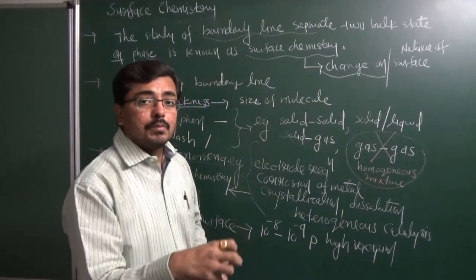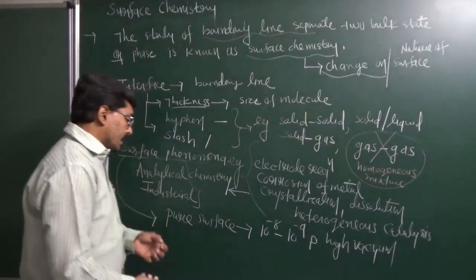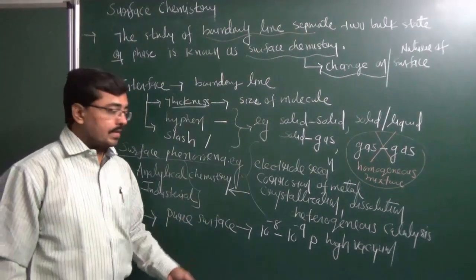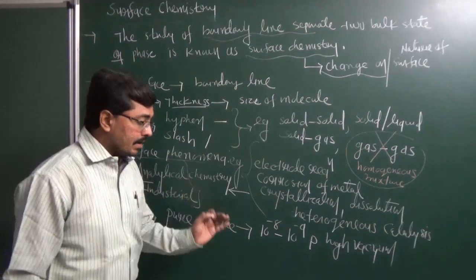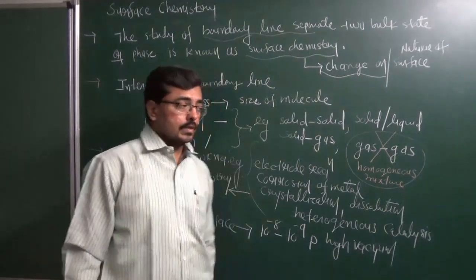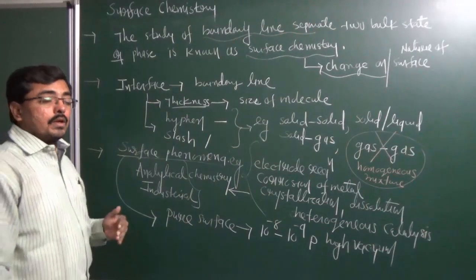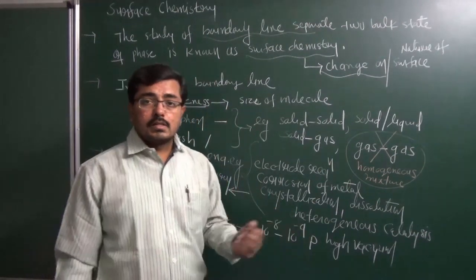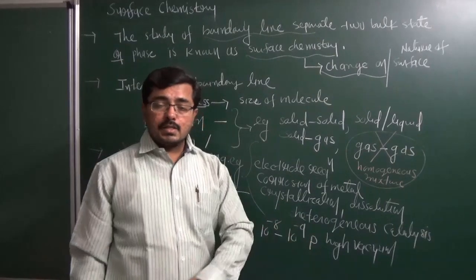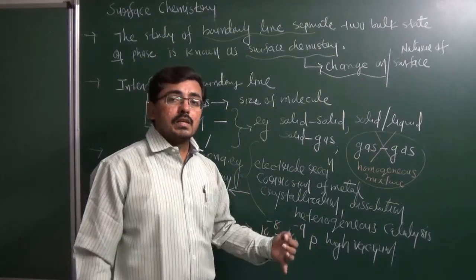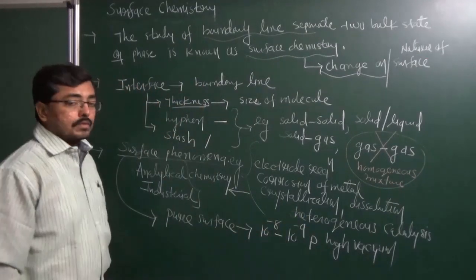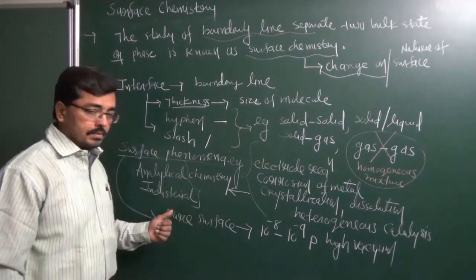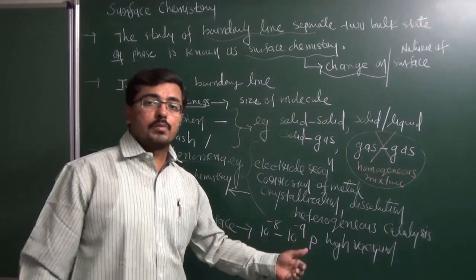To study the surface phenomena, a pure surface is required, which can be obtained by creating a high vacuum of 10⁻⁸ to 10⁻⁹ Pascal. In this Surface Chemistry chapter, we will study adsorption phenomena, the variety of types of adsorption, the colloidal state, and various types of catalysis — homogeneous, heterogeneous, and enzyme catalysis. Friends, don't forget to like and subscribe. In the next lecture, we will study what is meant by adsorption phenomena.